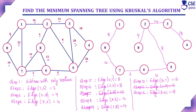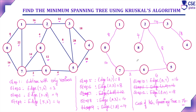We have now considered all edges — included those that do not form a cycle and skipped those that do. The algorithm is complete. This is the minimum spanning tree: all vertices are connected and no cycle is formed. The total cost is 8 + 16 + 2 + 4 + 8 + 4 + 14 + 18 = 74. We have successfully implemented Kruskal's algorithm to find the minimum spanning tree.